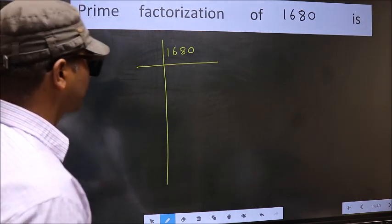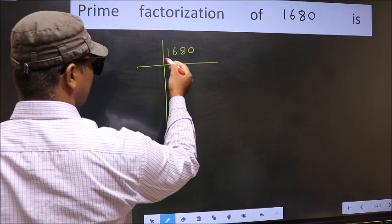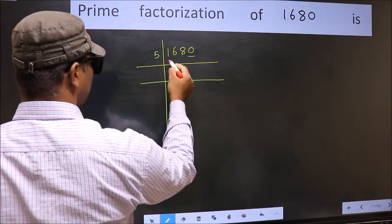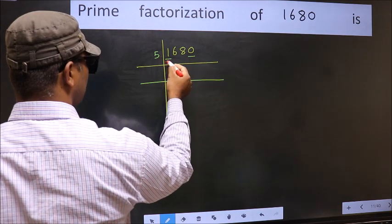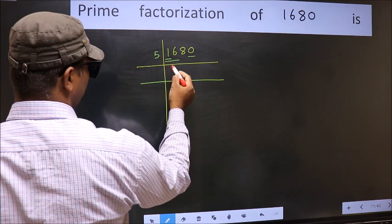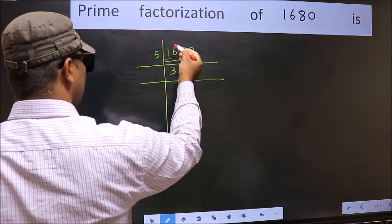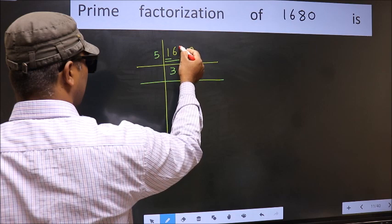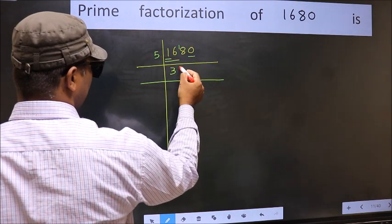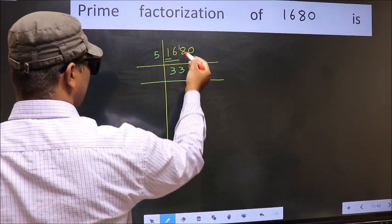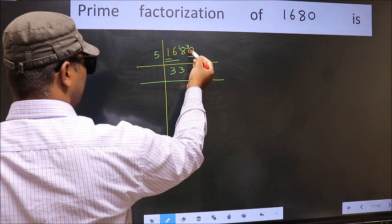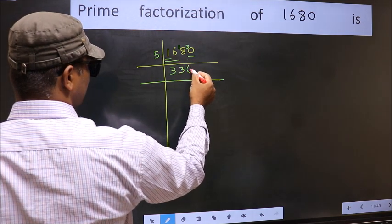Next. In this number, the last digit is 0, so take 5. First number 1 is smaller than 5, so take 2 numbers: 16. A number close to 16 in the 5 table is 5×3=15. 16-15=1, 1 carried forward: 18. A number close to 18 in the 5 table is 5×3=15. 18-15=3, 3 carried forward: 30. When do we get 30 in the 5 table? 5×6=30.